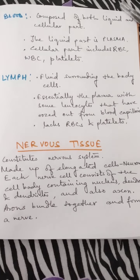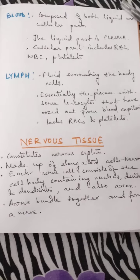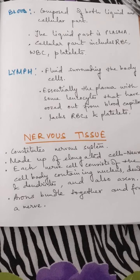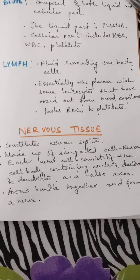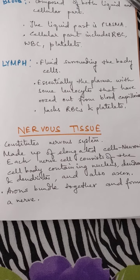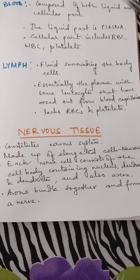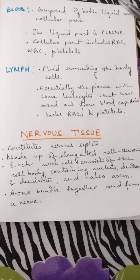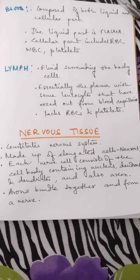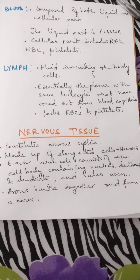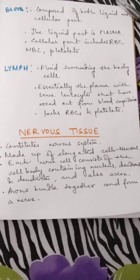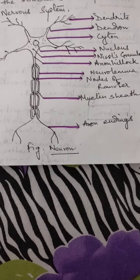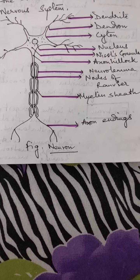The next and last kind of animal tissue is nervous tissue. It constitutes the nervous system and is made up of elongated cells known as neurons. Each nerve cell consists of the cell body or cytone, which contains the nucleus, dendrons, dendrites, and also the biggest extension at the end of the cytone — that is the axon. These axons bundle together and form a nerve. Here is a diagram of the nerve cell or neuron. This is the cytone.